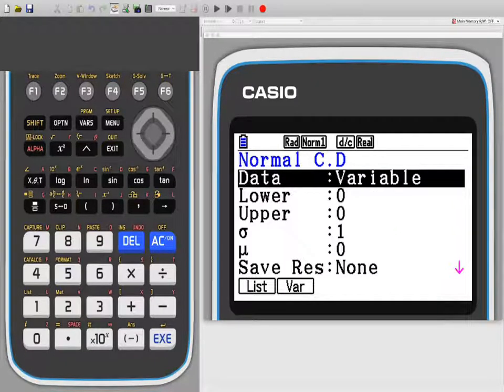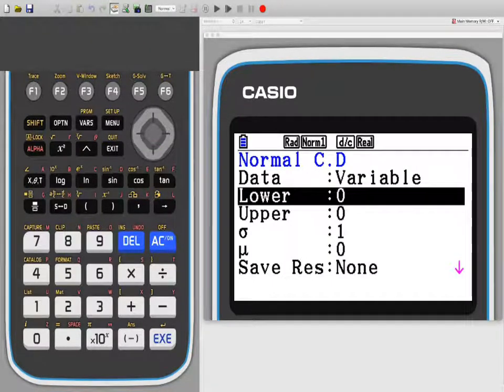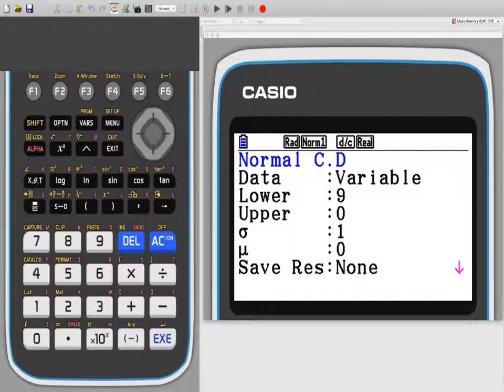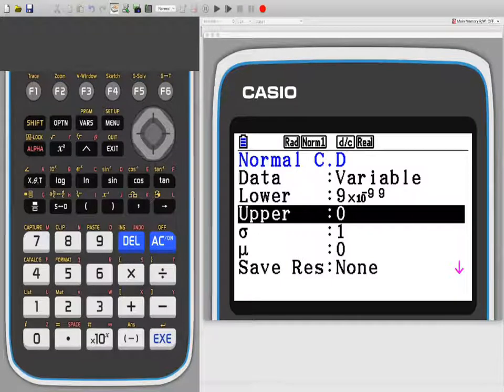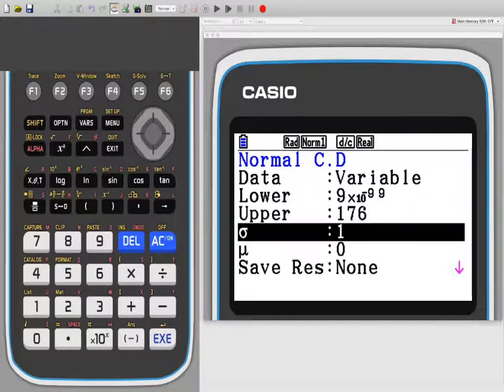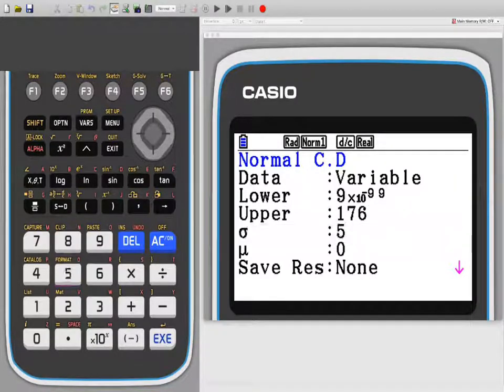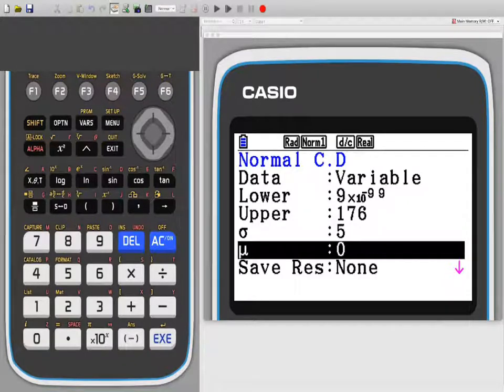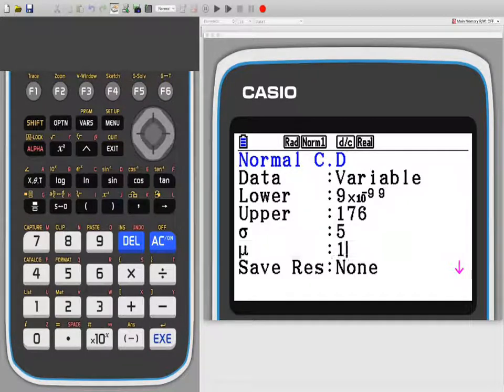So we know the other value is 176. In here we need to just put a low value. So if we put in here 9 times 10 to the minus 99, that's an extremely low value. So that will probably work. In the upper value, we put our value at 176. The next parameter is the standard deviation, which is 5, and then the next one was the mean, which was 170.